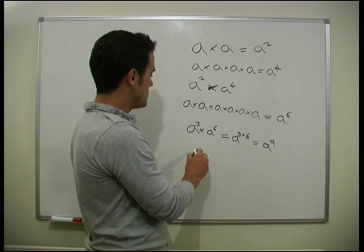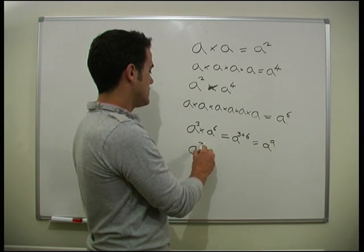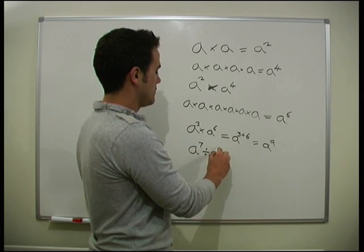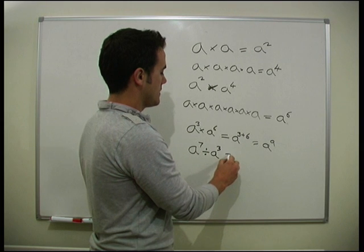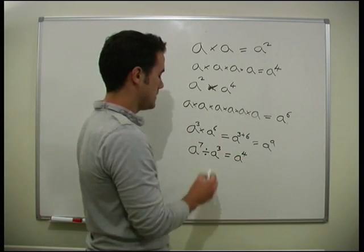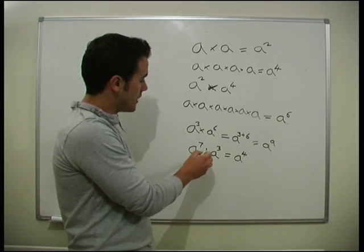Same through dividing. Sometimes a to the seven divided by a to the three, that would equal a to the four, a to the seven minus three.